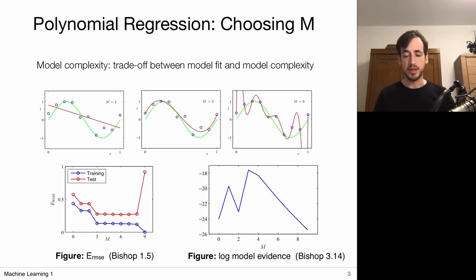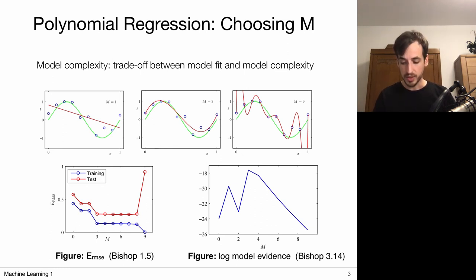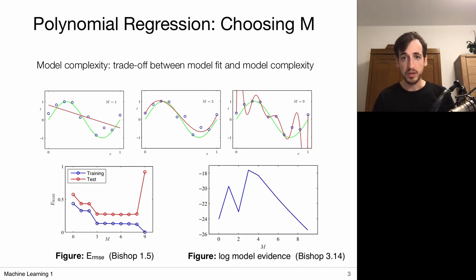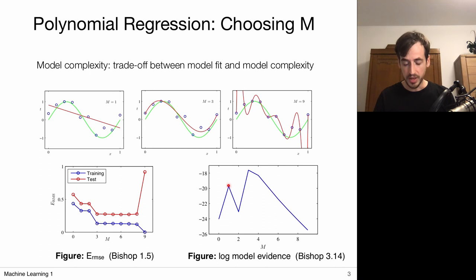This example from Bishop's book considers a curve-fitting problem with different polynomial basis function models of varying order. We evaluate the model evidence for each polynomial order and plot it. For order m=0, fitting a straight line gives very poor model evidence. Adding a linear component improves the fit and model evidence starts to increase. When we add x squared to the basis functions, the model evidence actually decreases — because the data is generated from a sine wave, which is an odd function, and x squared is an even function that cannot represent it.